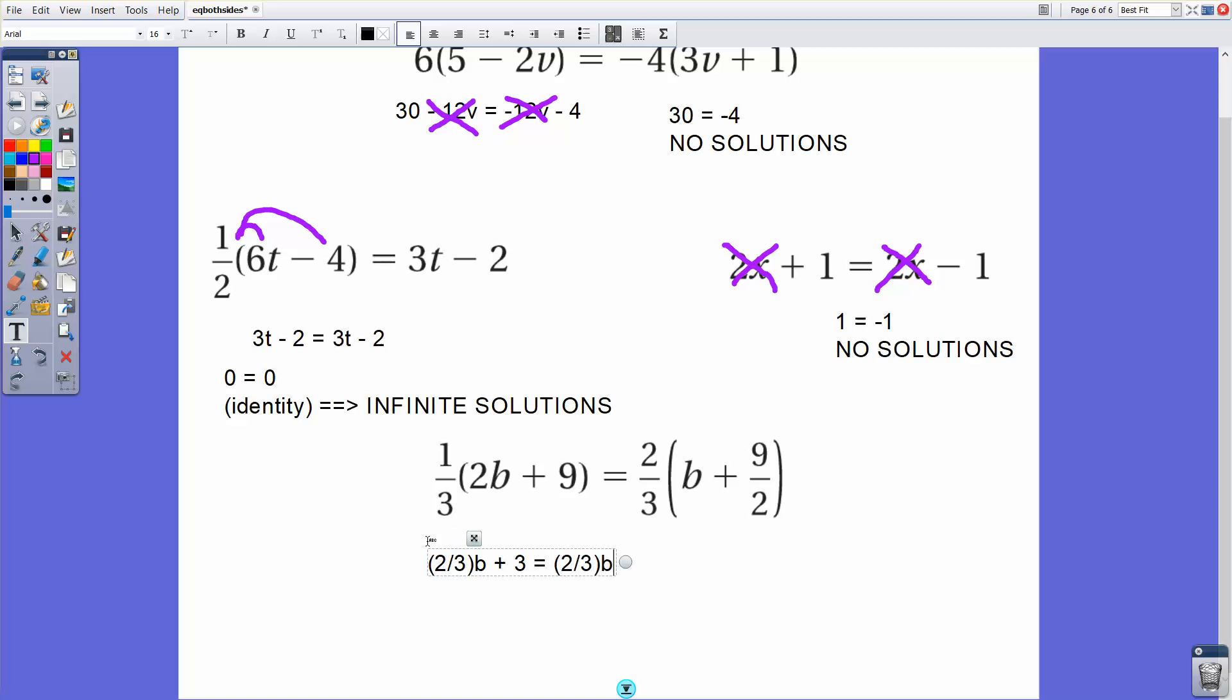And if I do 2 3rds times 9 over 2, that's 18 over 6, which simplifies to 3. So here's a situation where I have the exact same thing on both sides. This is an identity. And this means that there are infinite solutions.